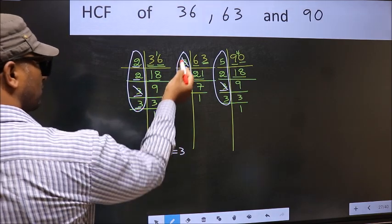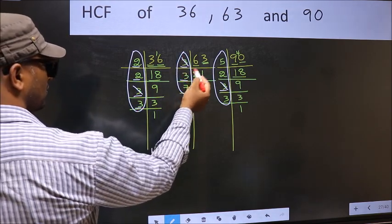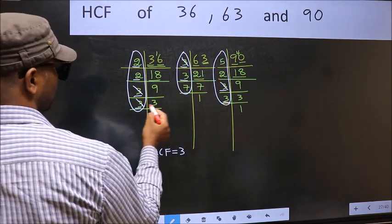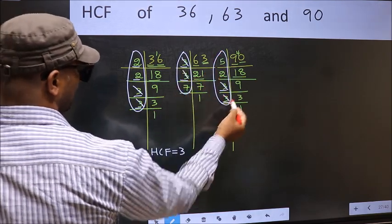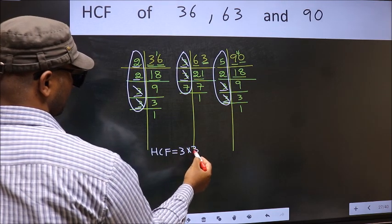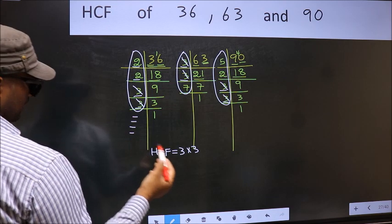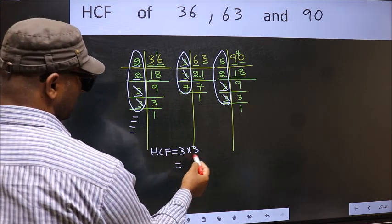Next number 3. Do we have 3 here? Yes. So, go to the next place. Do we have 3 here? Yes. So, cut 3 right here. No more numbers have been left out. So, HCF is 3 into 3. 9 is our HCF.